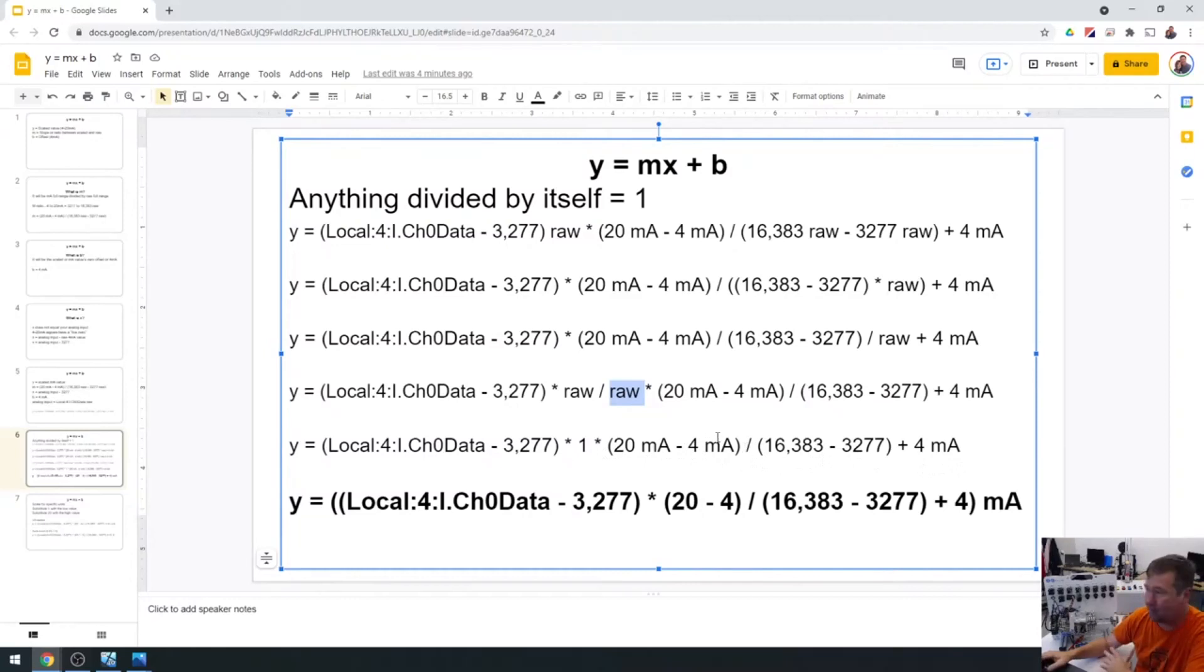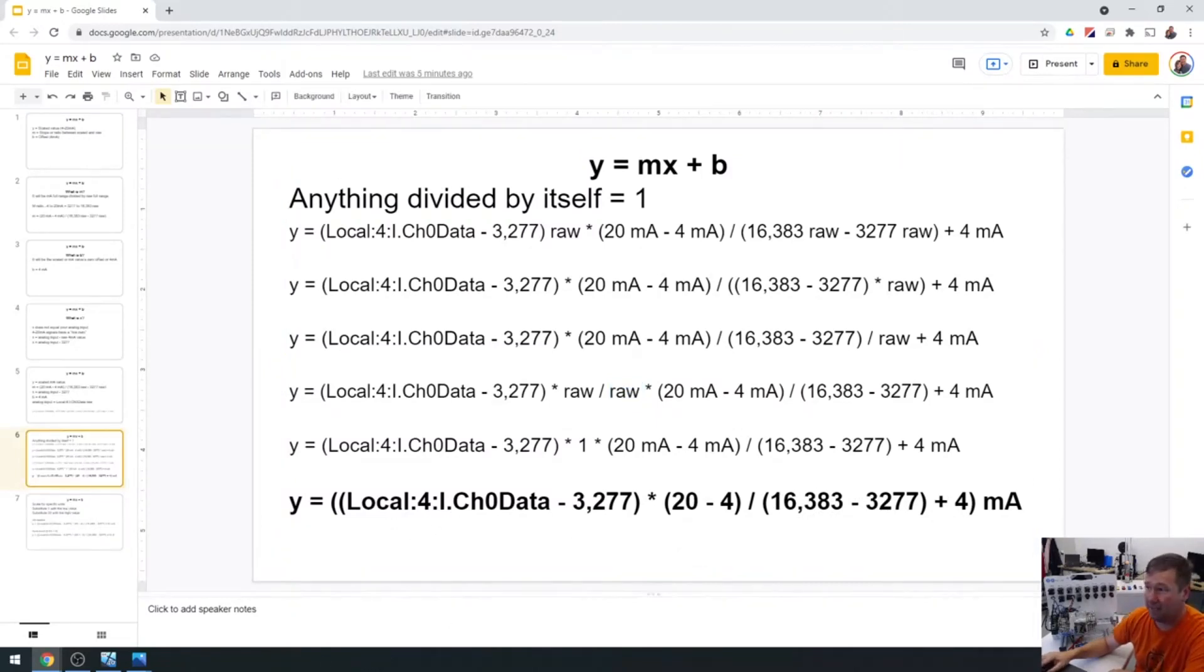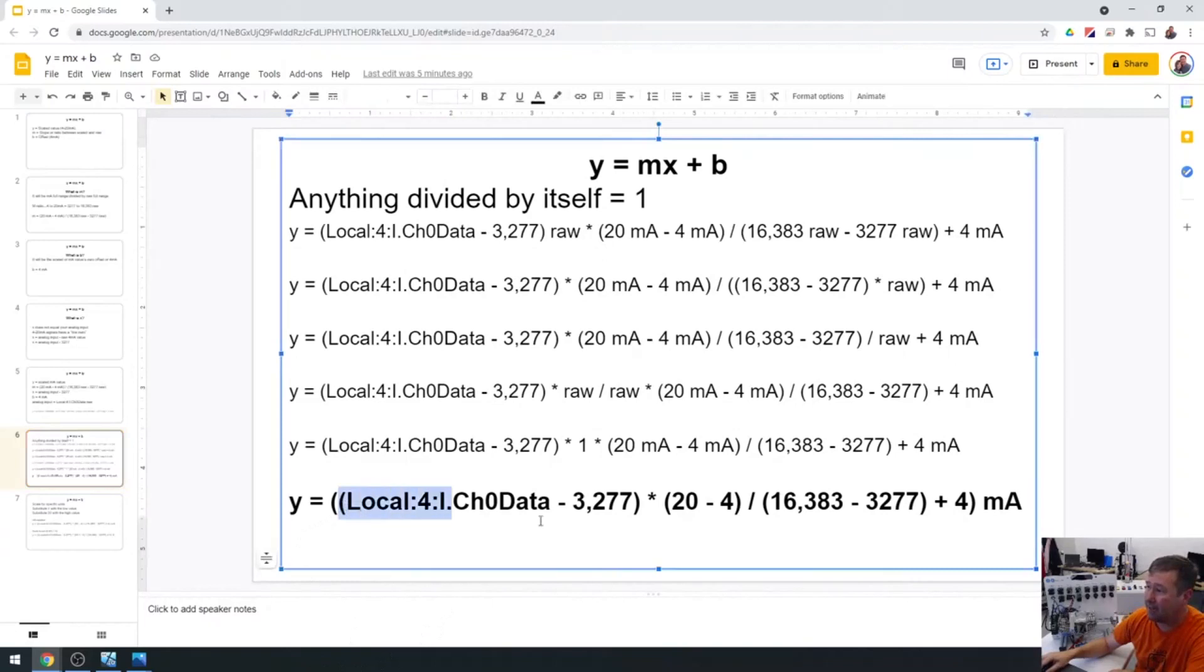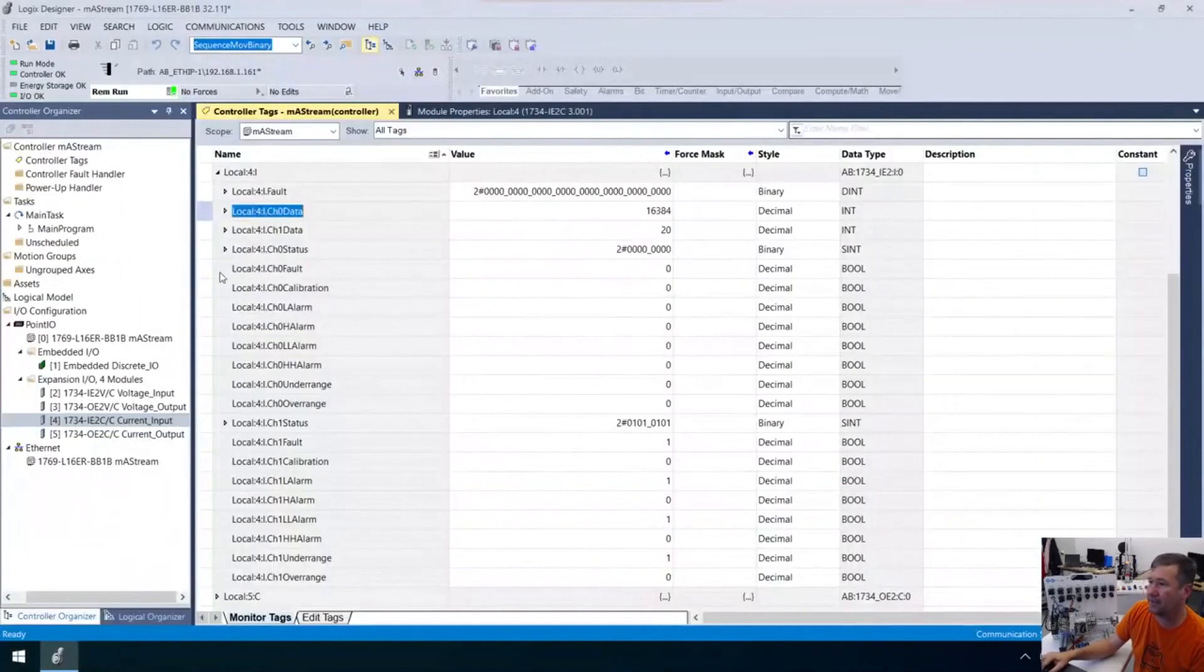Somebody put it in chat if you really want me to go deeper into this because I kind of threw this slide in just in case somebody really questioned or really wanted to know why. Hey, Daryl, glad you could make it on. But okay. In the end, here's our equation. So local colon four colon I channel zero data minus 3277 times 20 minus four divided by 16,383 minus 3277 plus four. That's going to be our four to 20 milliamp value. Now that's a lot of numbers. And we did not come here to do math. We came in here to figure out how to do analog inputs. So what can we do with that? I'm going to highlight this now and I'm going to copy it.